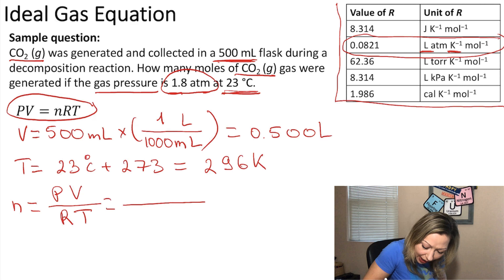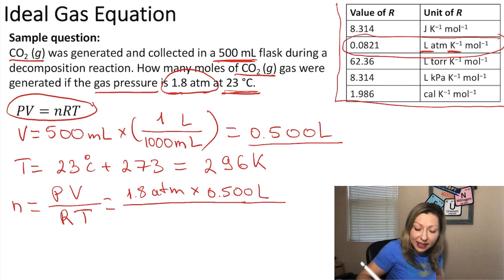So let's plug in all the values. The pressure is 1.8 atm multiplied by the volume in liters 0.500 liters, and then that is divided by the correct value of R which I chose based on the unit of the pressure.